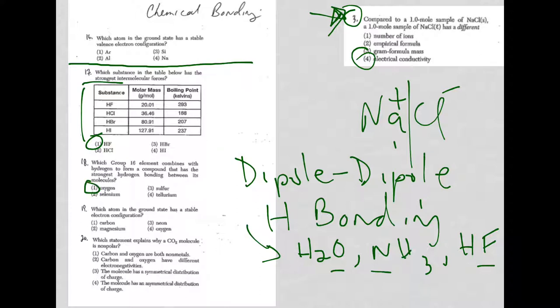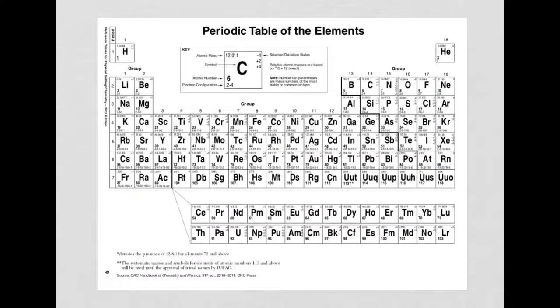Number 19, which atom in the ground state has a stable electron configuration? You've already seen this in 2015 on one of the other videos. Because stable electron configuration means noble gas, you go through the four choices.